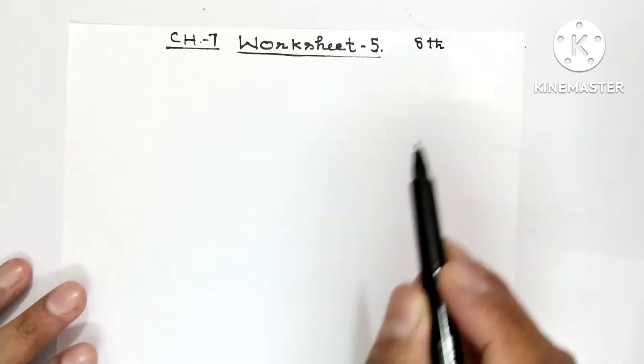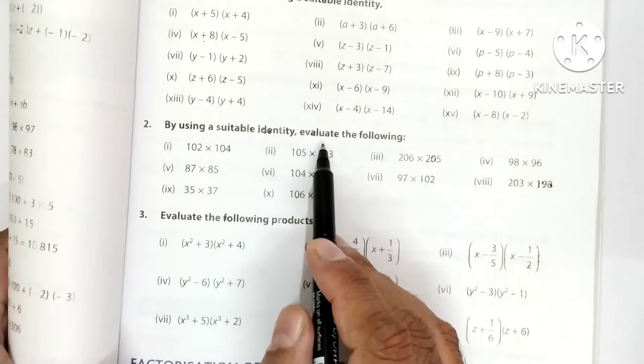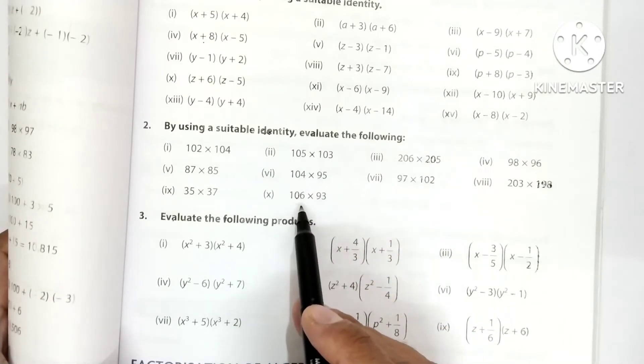So the question which we are going to do, I am showing to you. By using the suitable identity, evaluate the following. So there are 10 parts.